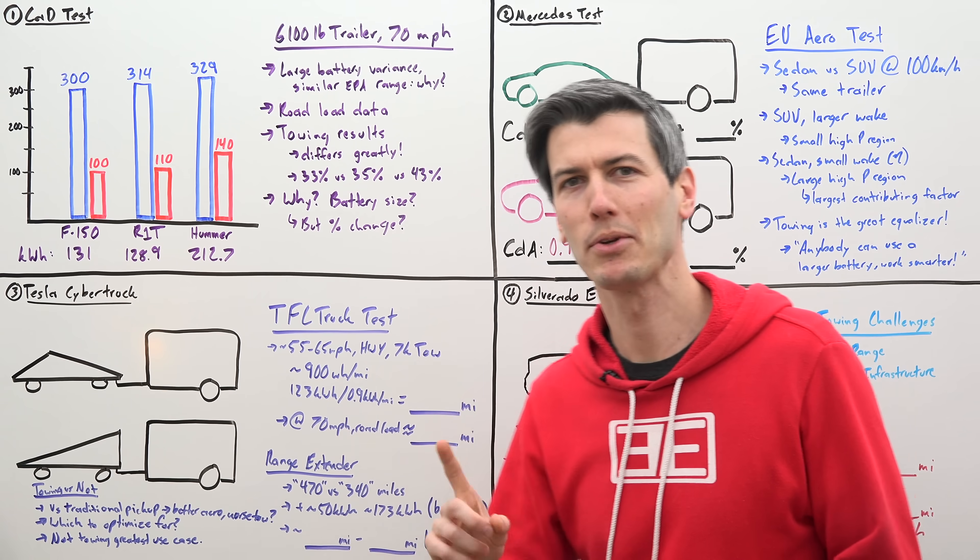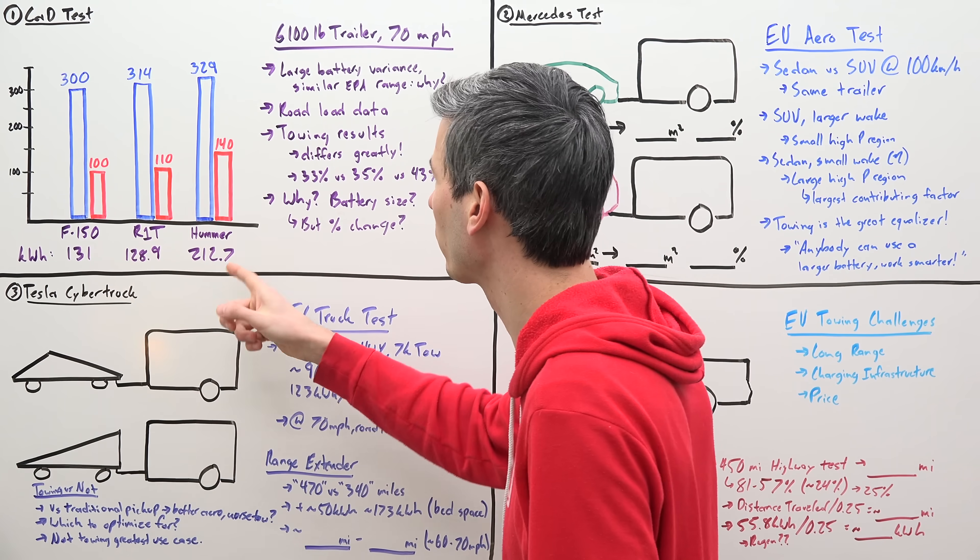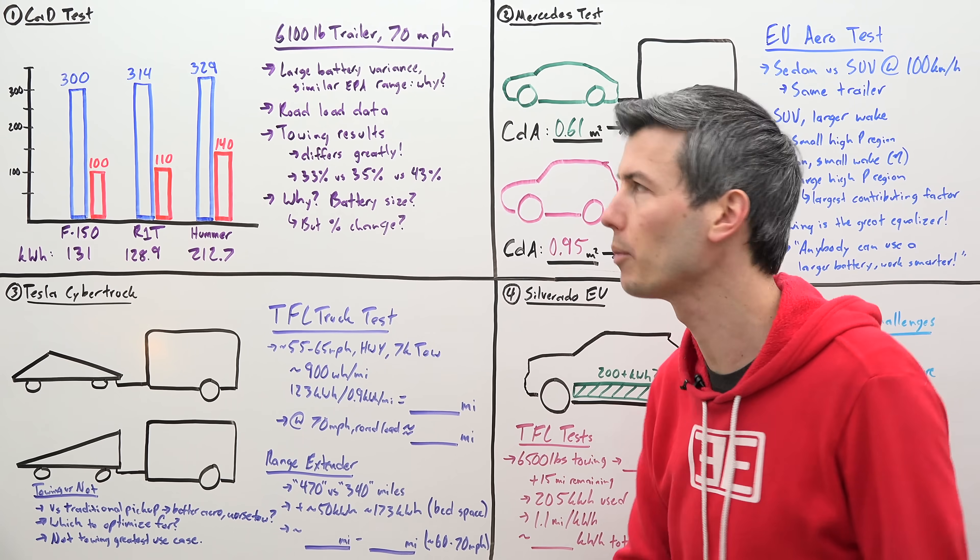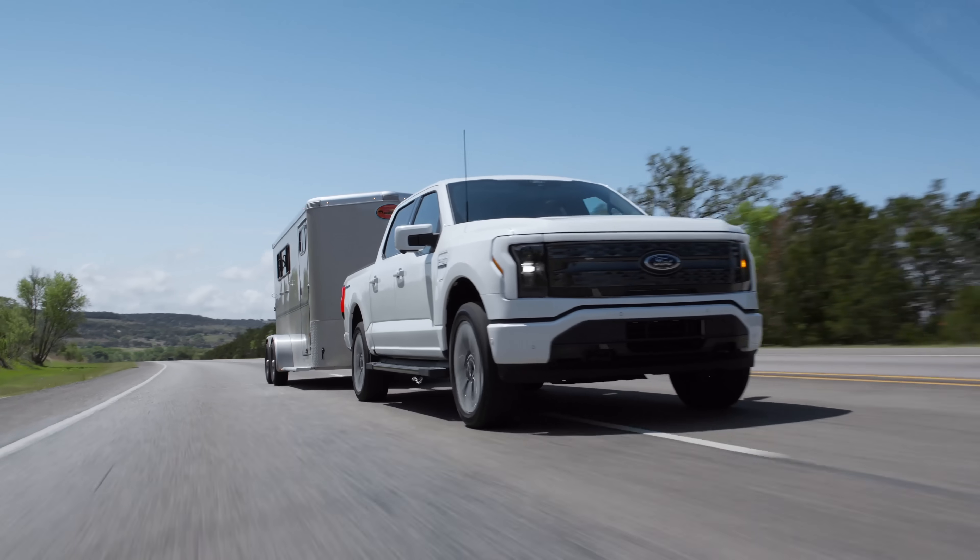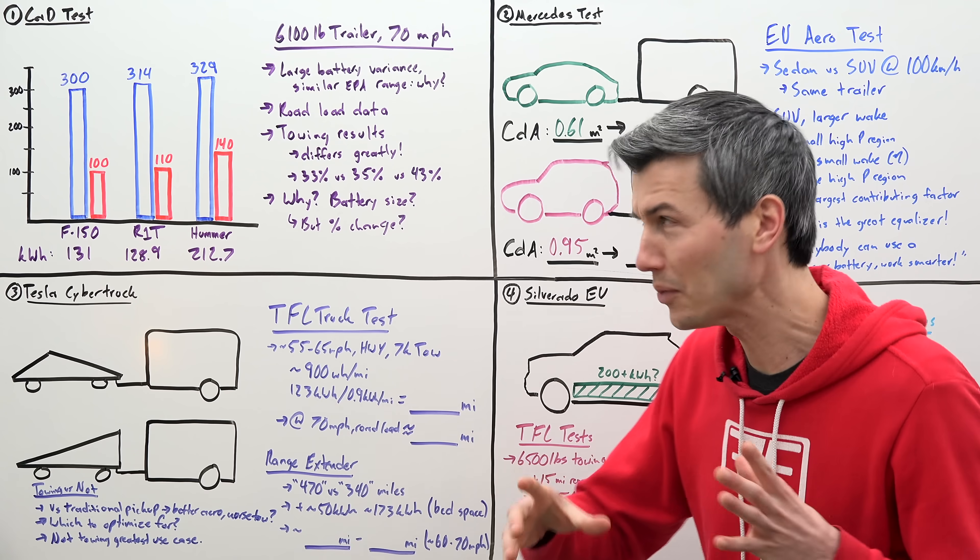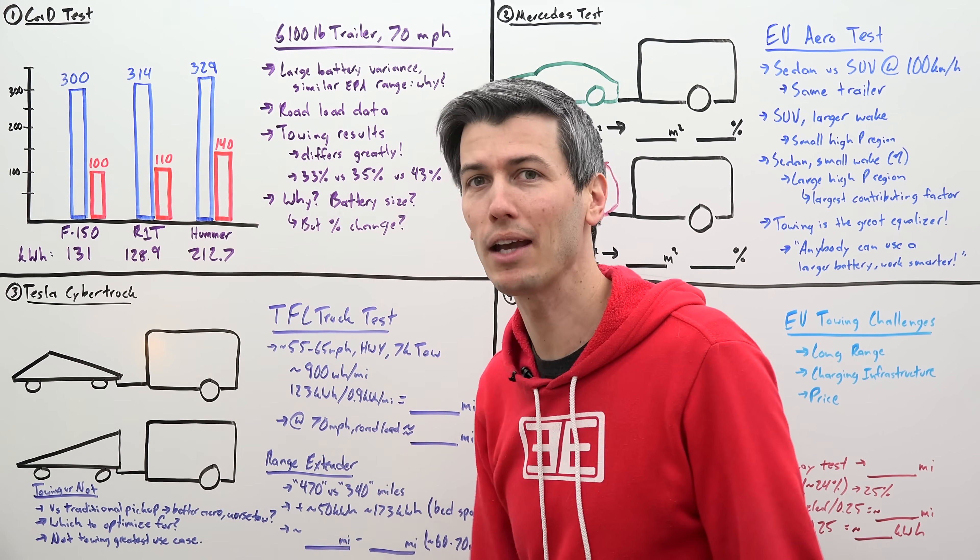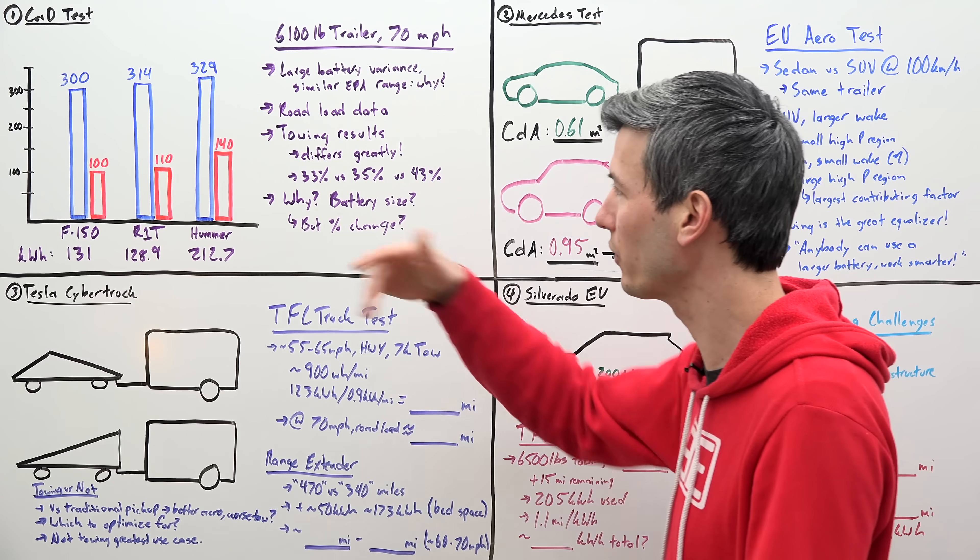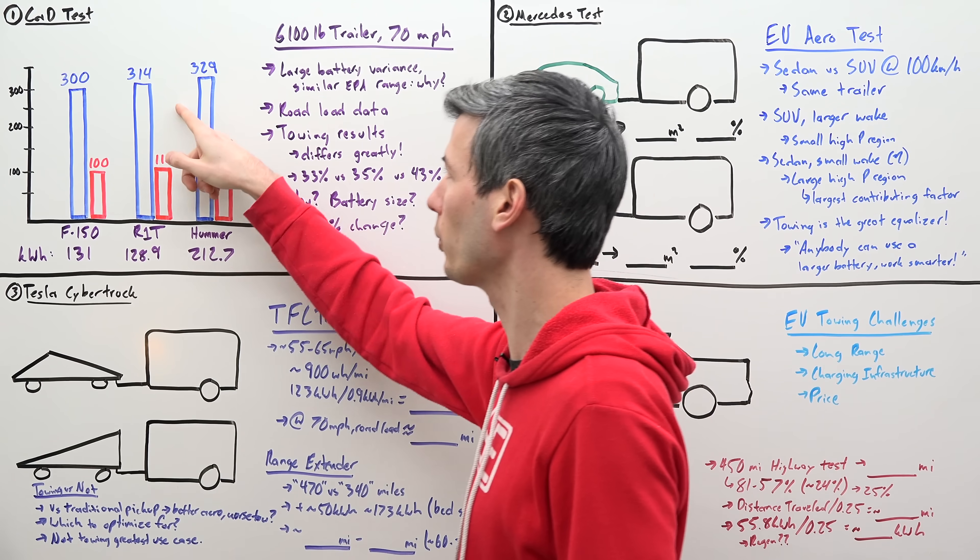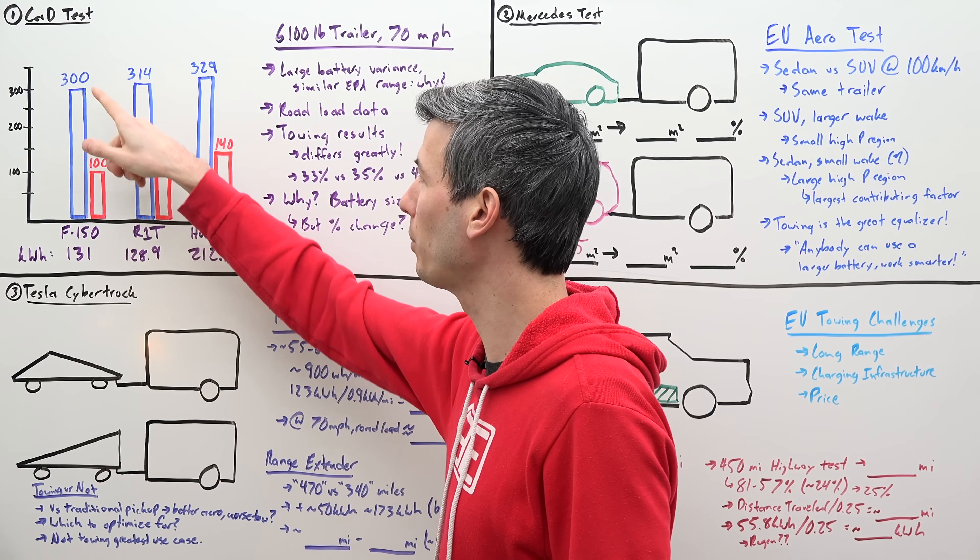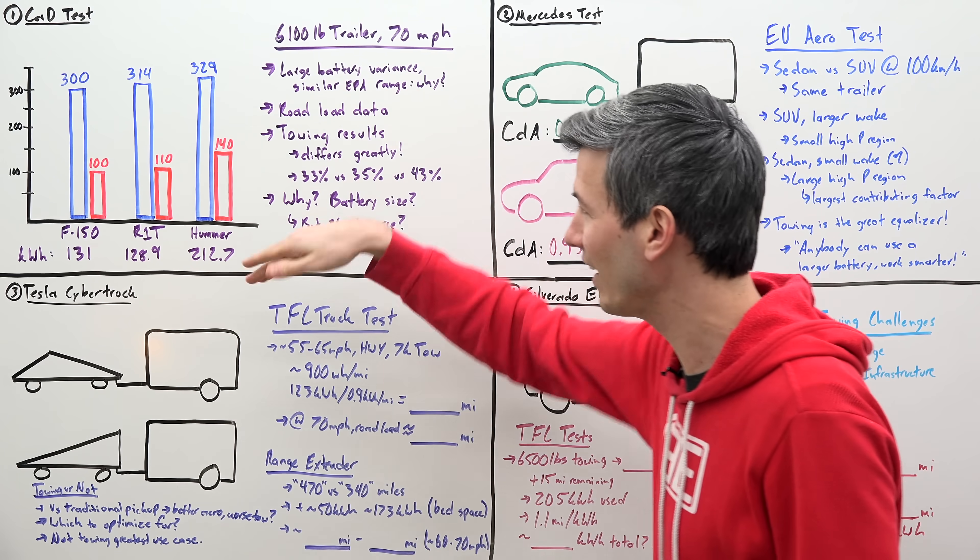But something really interesting happens when you start towing. So what Car and Driver did is they took these three trucks, they hooked them up to a 6,100 pound trailer, and they traveled at about 70 miles per hour on a highway loop to see how much range these vehicles had. Now, the results are pretty wild. The F-150 only had about a third of its claimed EPA range while towing. And the same story really occurs for the Rivian as well. So both of these dipping from low 300s to now about 100, 110 miles while towing. An insane drop.